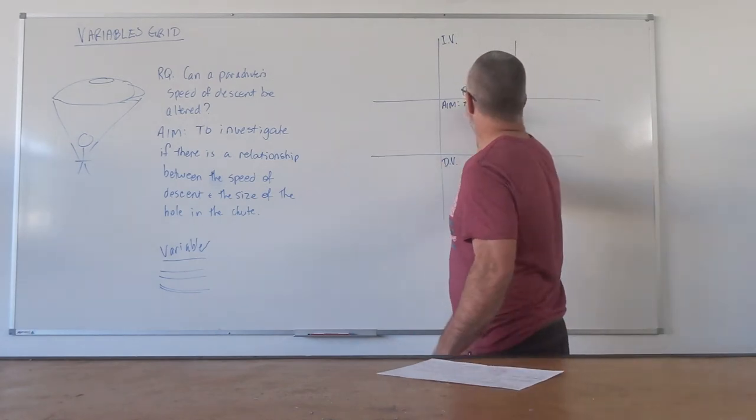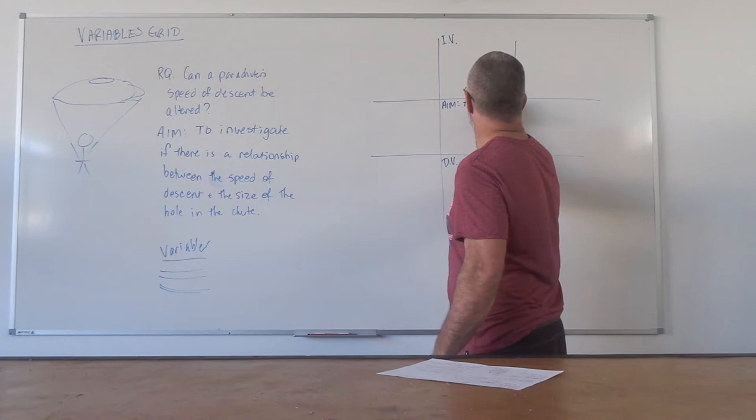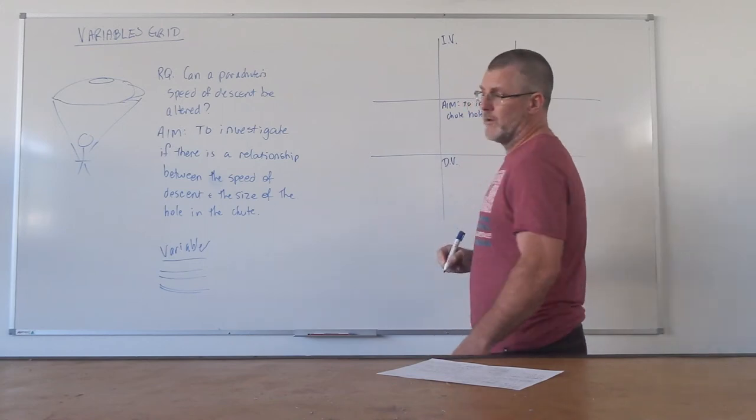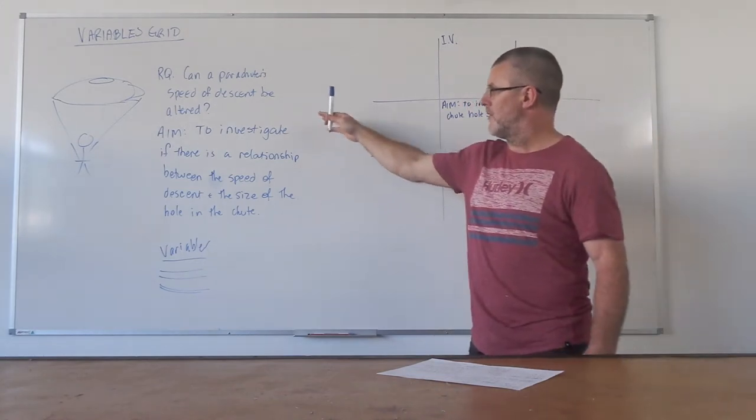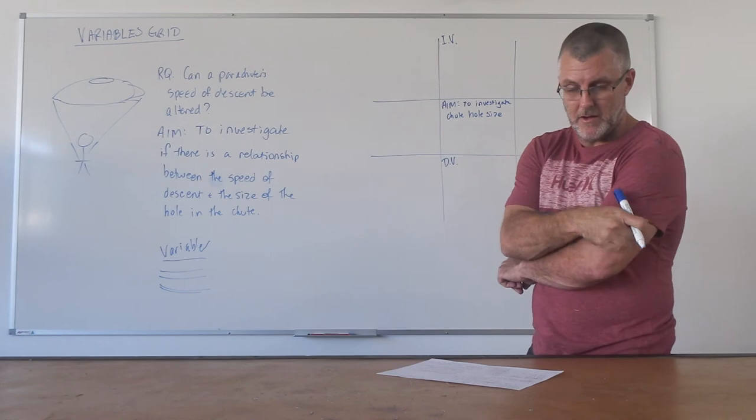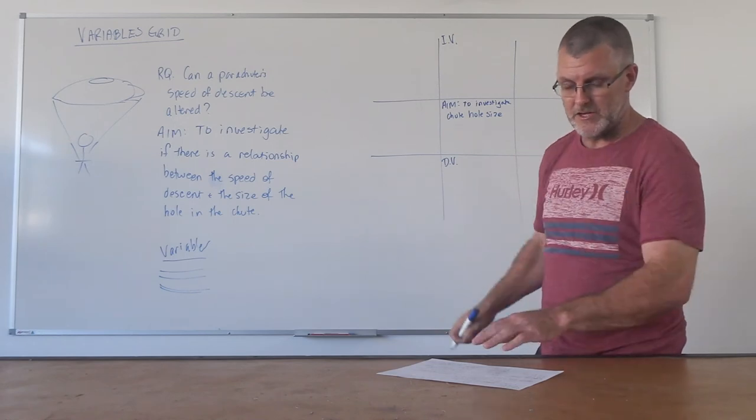I always get them to organize it in this one particular way where I write the aim in here, always write the independent variable up there and the dependent variable down there. You don't have to do that, but it's just one of those explicit teaching techniques where if you do the same thing over and over every single time, the familiarity with the process, that automaticity of the process, allows them to concentrate on the content you're trying to deliver instead. In this case, I'd rewrite the aim in here and I'm just going to abbreviate to 'investigate chute hole size.'